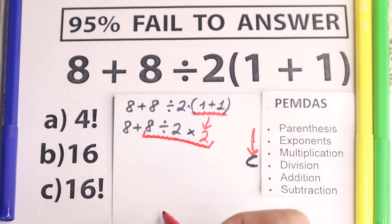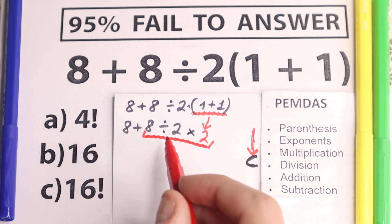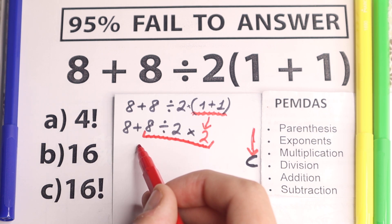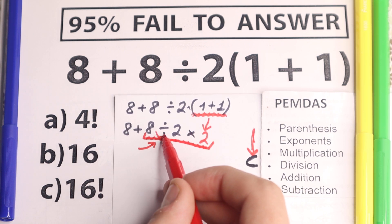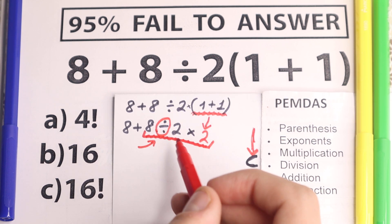For this question we need to scan what is the first sign from left to right. The first sign from left to right is this division. Then on the right hand side we have multiplication. But first sign is this division, so we need to divide first.